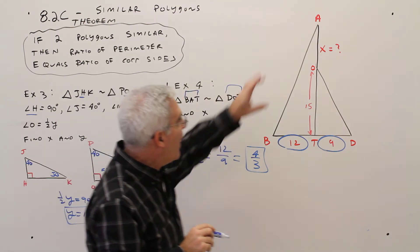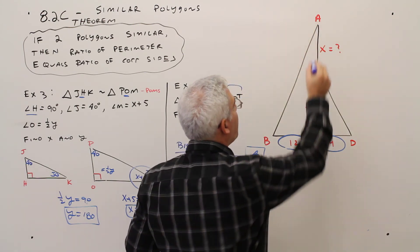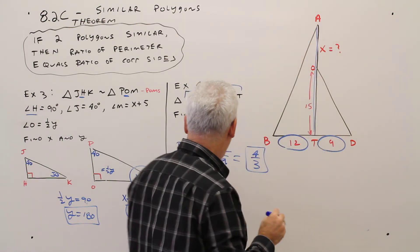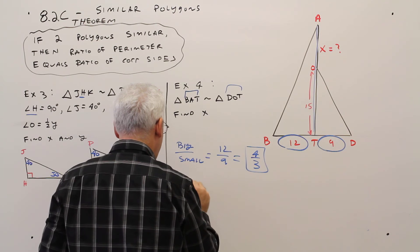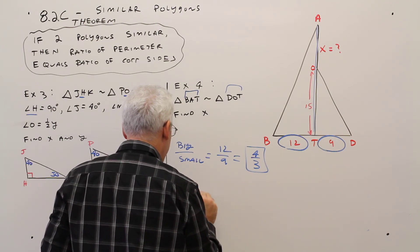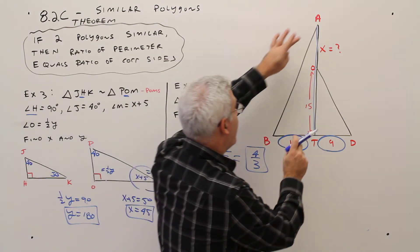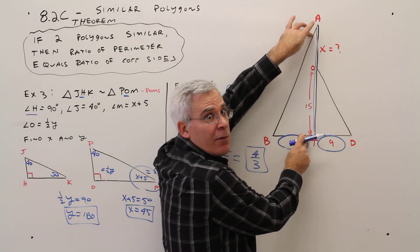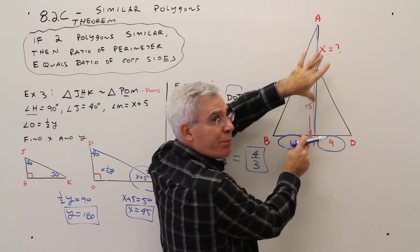I'm looking for X. Well, X is part of this big side. So again, I'll go big over small equals this big side. Hopefully you guys are okay. X plus 15.